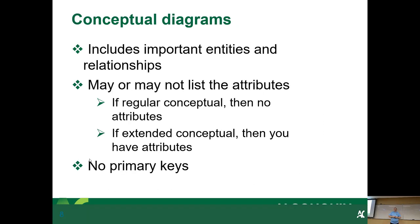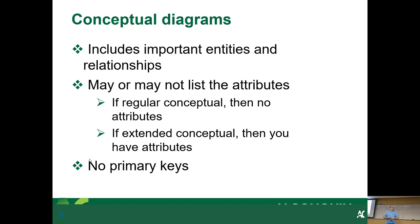Conceptual diagrams include important entities and relationships, and may or may not list the attributes. If it's a regular conceptual diagram, there are no attributes. Remember last week we talked about entities and attributes — basically the entities are the things, and the attributes are the data points used to describe the thing, like a name of a student. A regular conceptual diagram has literally just the entities and their relationships. An extended conceptual will have attributes, and it has a bunch of different kinds of symbols to represent all the kinds of attributes you would find.